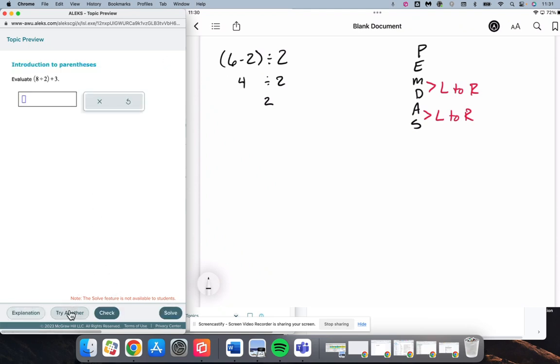All right, we will try another. 8 divided by 2 plus 3. And so completing the work inside parentheses first, we have 8 divided by 2 is 4 plus 3. 4 plus 3 makes 7.